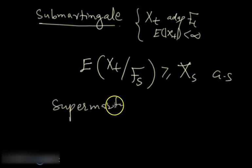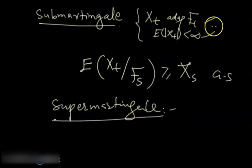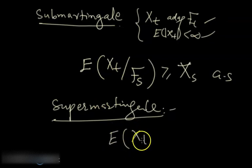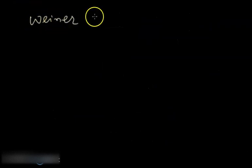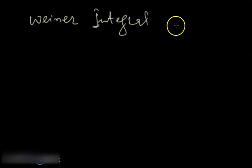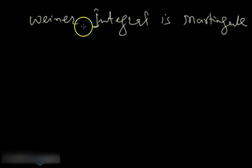For super-martingale, a process is a super-martingale if those two conditions hold along with the expectation of X(t) given F_s being less than or equal to X(s) almost surely. In the next video, we're going to see that the Wiener integral as a stochastic process is a martingale. We will define an integral with the help of the Wiener process and see that it's a martingale.